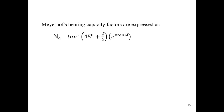Meyerhoff's bearing capacity factors can also be calculated using the following equations: Nq = tan²(45 + φ/2) · e^(π·tanφ), where φ is the angle of shearing resistance, which can be found using the triaxial shear test or direct shear test. Similarly, Nc and Nγ can also be found by their respective formulas.